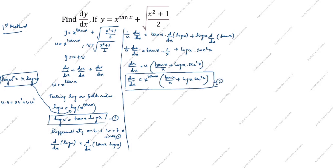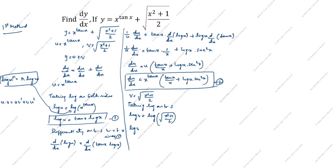We still need dy/dx; we have du/dx. Now we need dv/dx. v is equal to root of (x squared plus 1) divided by 2. Taking log on both sides: log v equals log of root of (x squared plus 1) divided by 2. Using the formula log m^n equals n log m, we write log v equals (1/2) log of (x squared plus 1) divided by 2.